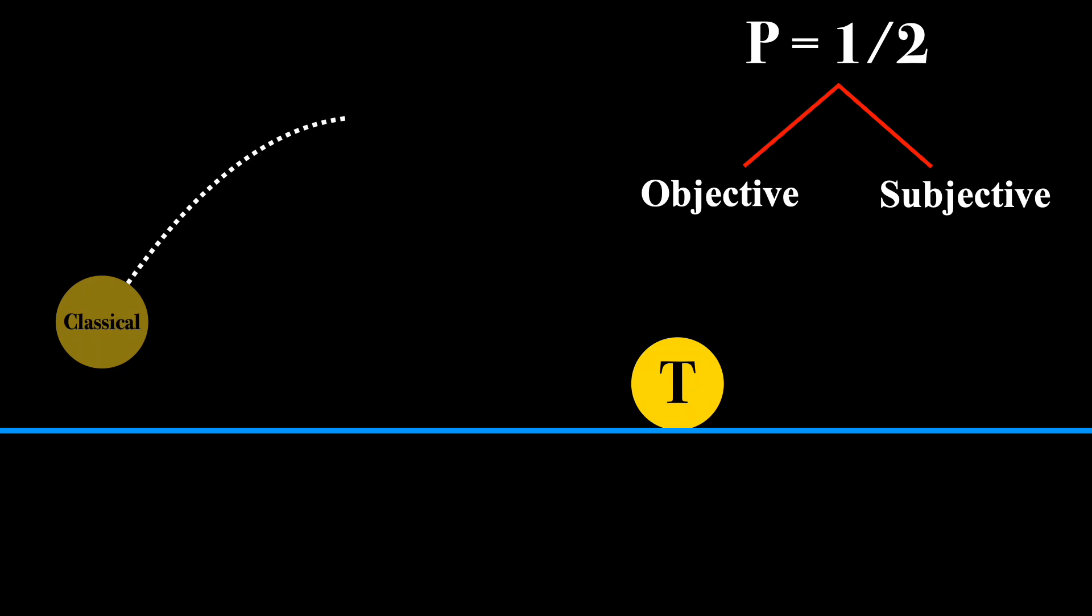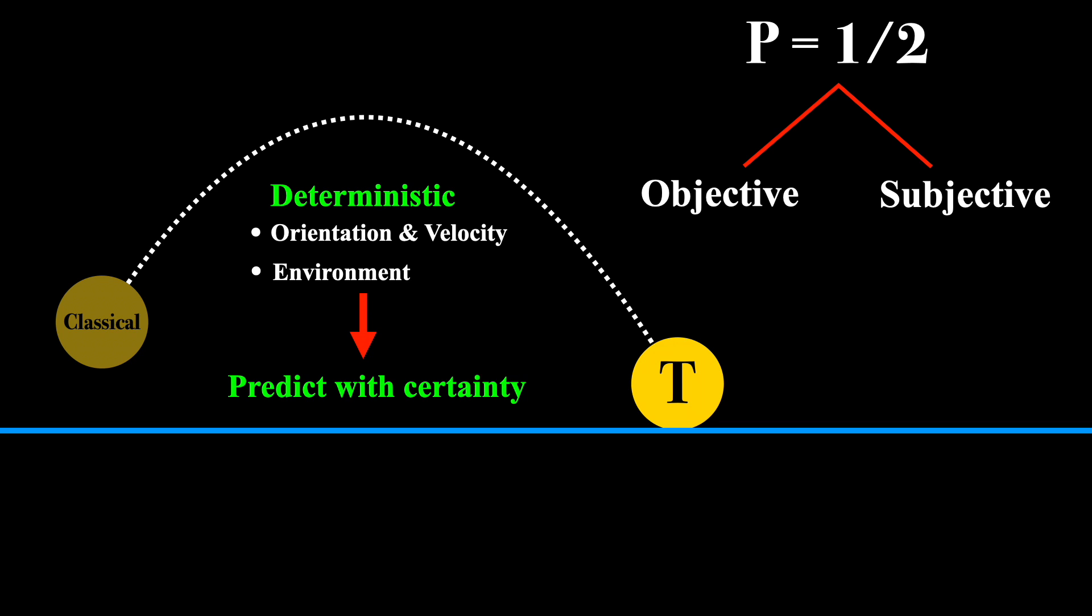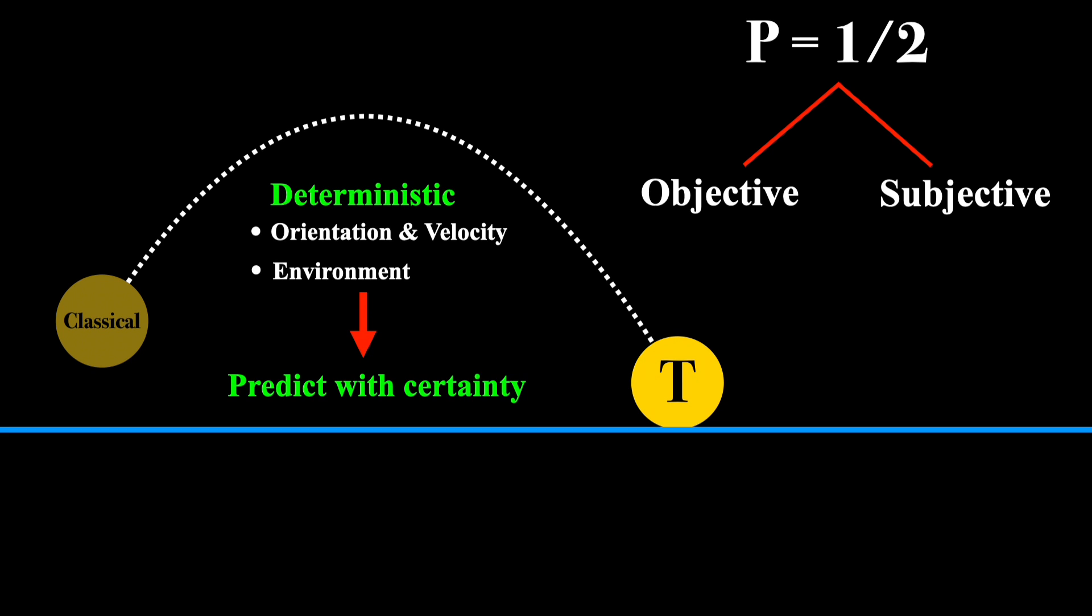A regular coin obeys the laws of classical mechanics, and this means that the path it takes is deterministic. If you knew the exact orientation and velocity that the coin had when it was released, and all the relevant factors of the environment the coin was in, then in principle you could predict with certainty exactly what outcome would occur.